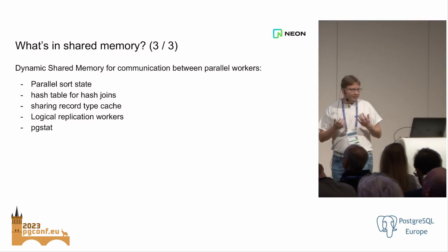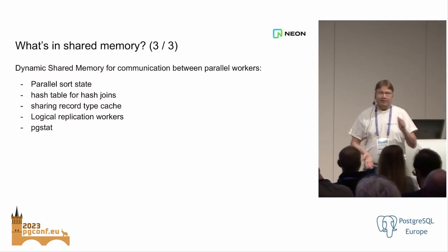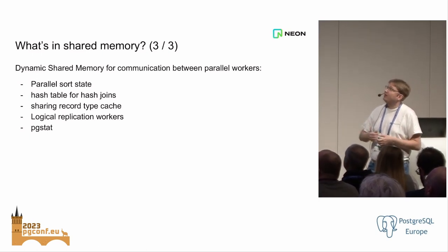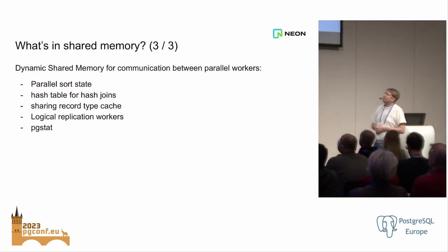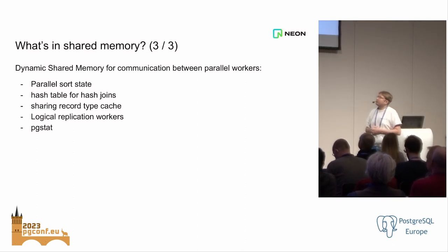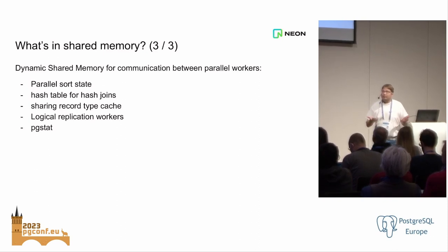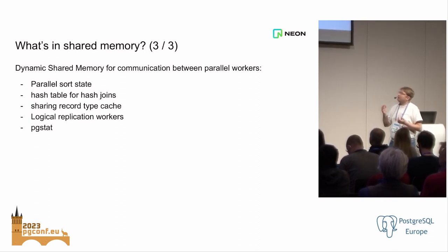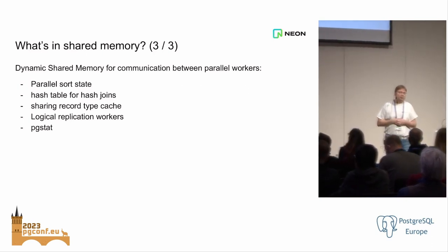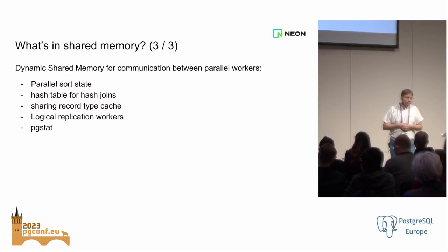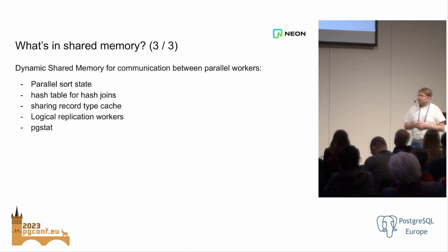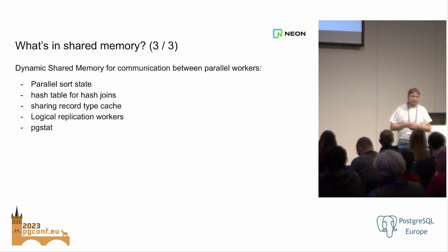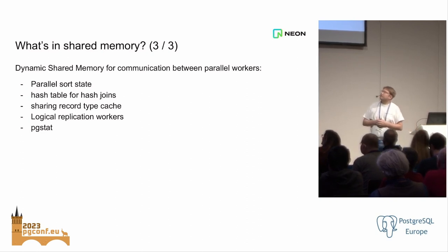And there's more — there's dynamic shared memory, because we found it's actually pretty awkward if you can't resize the shared memory blocks. So we invented a mechanism called dynamic shared memory, which allows you to allocate new big blocks of shared memory and resize them. But it's more awkward to work with. We use it for stuff like parallel sorting, hash tables for parallel hash joins, and sharing the record type cache. The first three of those are all related to parallel queries. Parallel query was one of the first things that would have benefited from multi-threading, but the developers of the parallel query feature didn't want to go there, because it would have been like having to run two marathons. So they decided to go with dynamic shared memory instead.